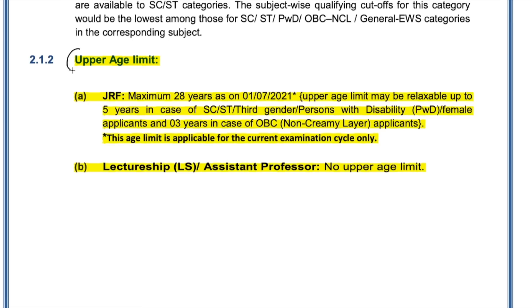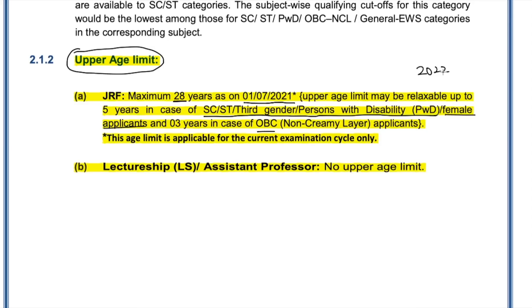Now let's talk about age limit — this is very important. For JRF, the maximum age is 28 years as on 1st July 2021. The upper age limit is relaxable by up to five years for SC/ST, third gender, PWD candidates and female applicants, and three years for OBC candidates. Importantly, even though the exam is happening in 2022, CSIR has made the cutoff date 1st July 2021, which effectively gives one year of age relaxation.